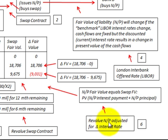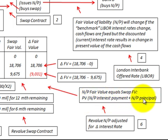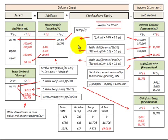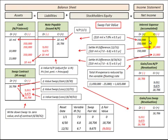Looking at our notes payable, we have to revalue it to adjust for the change in interest rates as well. We'll assume the notes payable fair value equals the swap's fair value, based on the present value of the notes payable interest payment plus the principal amount for that period. To record this on the balance sheet, we set up notes payable as a liability, a swap contract asset, and cash transactions. On the income statement, we record gain or loss on the swap, gain or loss on the notes payable, and interest expense recognized.